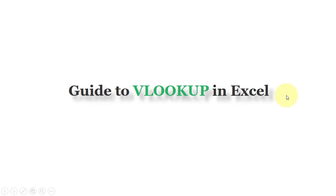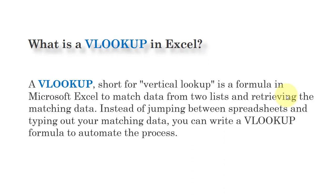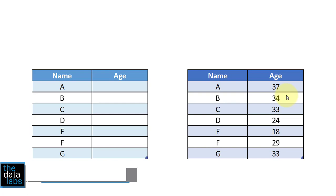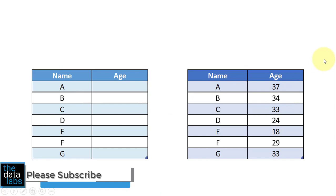Before moving ahead, let us know what is the VLOOKUP function. VLOOKUP is a formula to match data from two lists and retrieve the matching data. Suppose you have two datasets and need to match data from one table to another table.